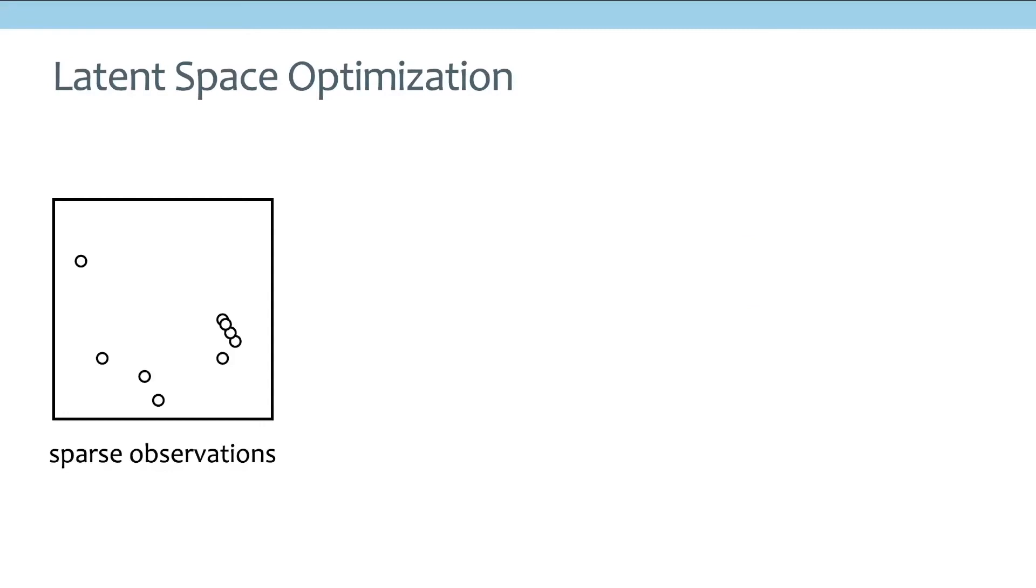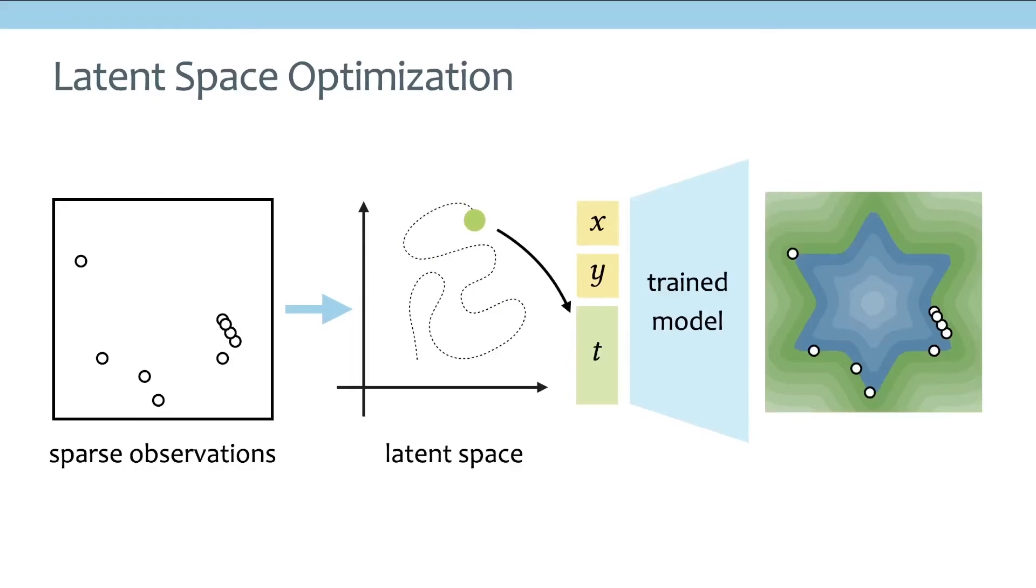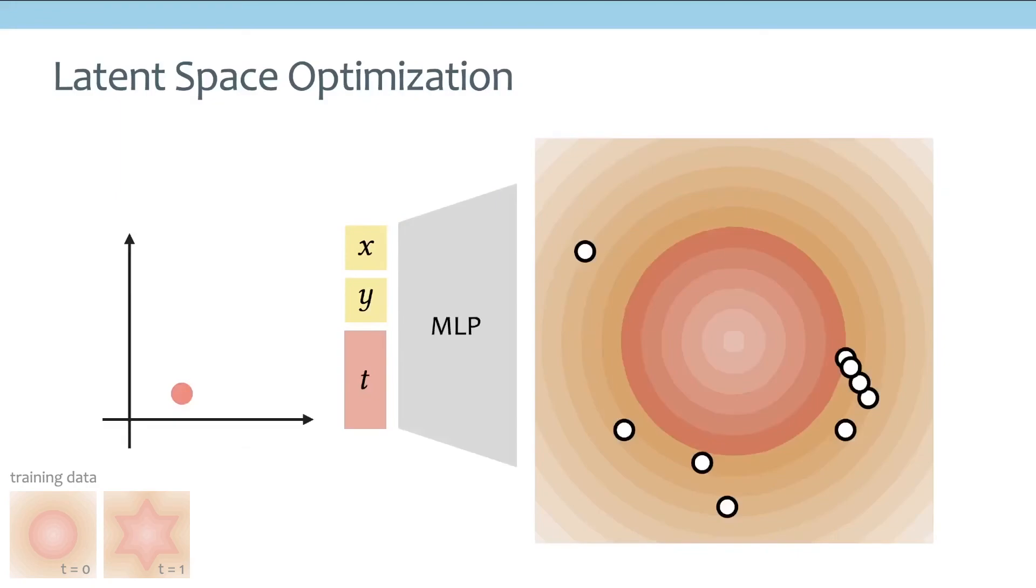And this is also useful for another application called latent space optimization. So how it works is that if I start with some sparse observations, this optimization tries to search through the latent space to find a better latent code so that when we decode this latent code, we will be able to obtain the implicit function where the zero isosurface lies on those sparse samples. If we use this latent space optimization on a standard MLP, when we run this optimization, because the latent space is not very smooth, we may easily get stuck on some bad local minimum like the result shown here.